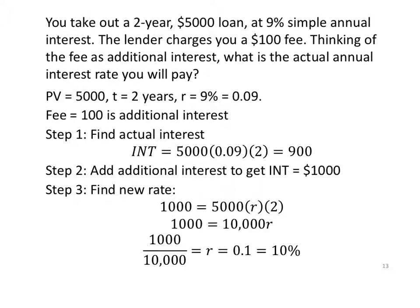You take out a 2 year $5,000 loan at 9% simple annual interest. That first sentence tells me my present value is $5,000, that's the amount of the loan. My time is 2 years, my interest rate is 9%. Okay, second sentence. The lender charges you a $100 fee. Fee, $100. Thinking of the fee as additional interest, what is the actual annual interest you will pay? If you have all your values listed already, PV, R, T, I can find the interest rate from the loan itself. So let's do that. Let's find the actual interest rate. Now interest is PV times R times T, so 5,000 times .09 times 2. That happens to be $900.